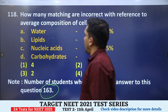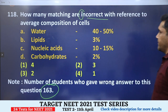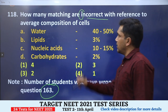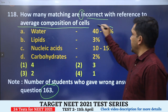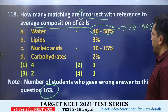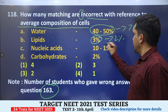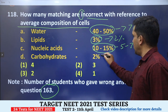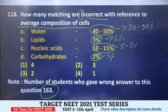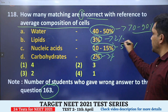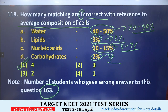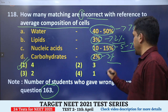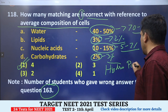Now question number 118, attempted wrong by 163 students. How many matchings are incorrect with reference to average composition of cells? This is from the biomolecules chapter. The correct average composition is: water 70-90%, lipids 2%, proteins 10-15% (given as 5-7% in the question — wrong), and carbohydrates 3%. All four matchings given are incorrect.